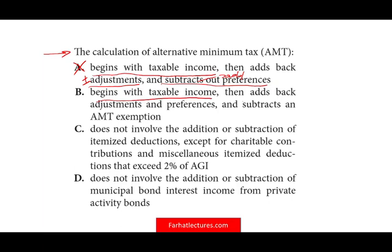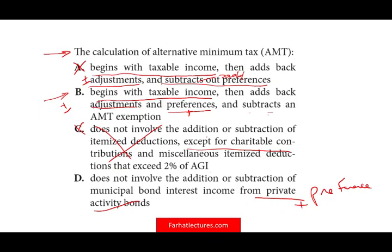Option B begins with taxable income — so far so good — then adds back adjustments and preferences, and subtracts the AMT exemption. That looks good, because we do add back adjustments and preferences. The phrasing 'add back' means they could be plus or minus; they did not specify. Preferences are always a plus. Option C says it does not involve itemized deductions — that's not true. Option D says it doesn't involve adding private activity bond interest — no, that is a tax preference and we do add those. Therefore, as expected, B is the answer.